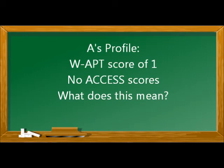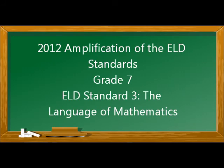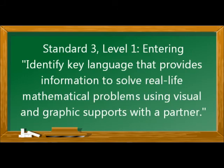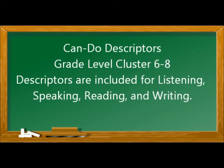Unfortunately, A does not currently have any ACCESS scores. However, he does have a WAPT score of 1, which means his English language proficiency is in the lowest level graded by the test. Using this information, we can utilize the 2012 Amplification of the ELD Standards and the Can-Do Descriptors to help write language objectives. For example, looking at Grade 7, ELD Standard 3 — the Language of Mathematics — I would choose Level 1, Entering, because that suits A's level. Similarly for the Can-Do Descriptors, I would look at the grade level cluster for grades 6 through 8 and again choose Level 1, Entering, as a guide to help write language objectives.